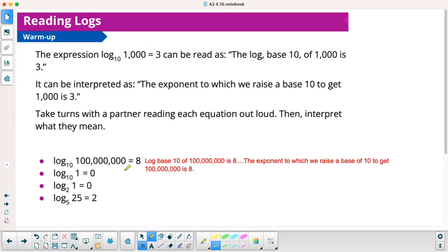The expression log base 10 of 1000 equals 3 can be read as the log base 10 of 1000 is 3. It can be interpreted as the exponent to which we raise a base of 10 to get 1000 is 3. Take turns with your partner reading each equation out loud, then interpret what they mean.